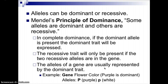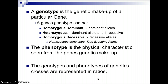The recessive trait will only be expressed if two recessive alleles are present — two lowercase p's. The alleles of a gene are usually represented by the dominant trait. So the gene for flower color: capital P for purple (dominant), lowercase p for white. In order to have the white trait expressed, you'd have to have two lowercase p's. The genotype is the genetic makeup of the gene. There are three basic types: homozygous dominant (two dominant alleles), heterozygous (one dominant and one recessive allele), and homozygous recessive (two recessive alleles). Homozygous genotypes are typical of true breeding plants.